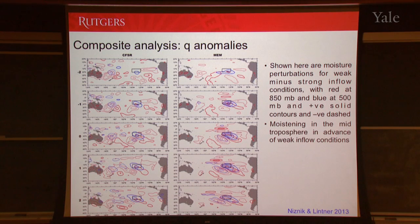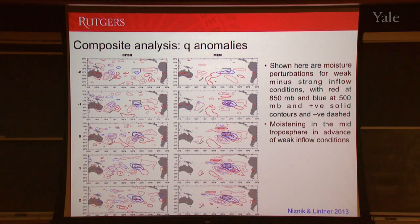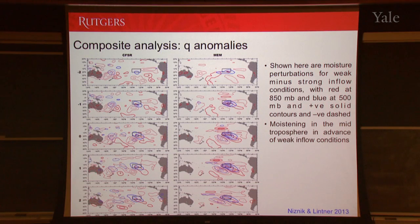There's a question about whether the moisture anomaly is advected in or created in situ — and the answer is probably a mixture of both. That's one of the struggles with doing these types of analyses: it's hard to tease apart what's forcing what. Some of the theory says these waves come in and because of local characteristics they're exciting a local convective response. But it's not a clean separation.